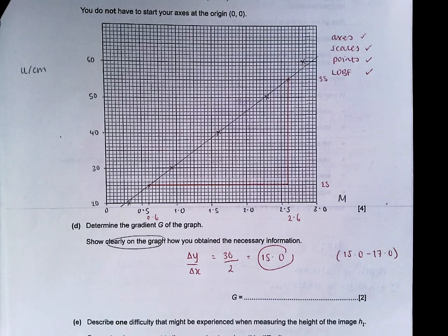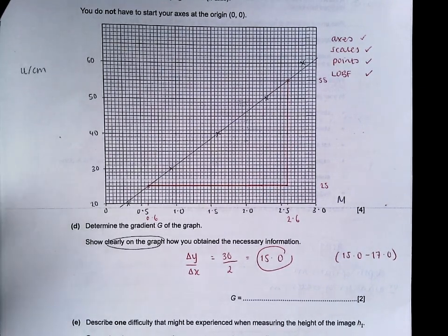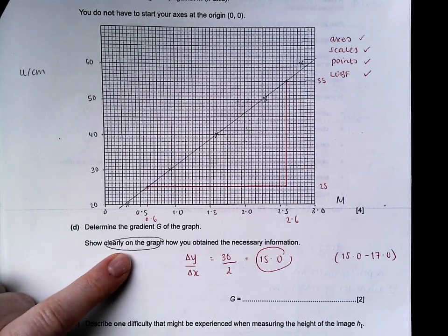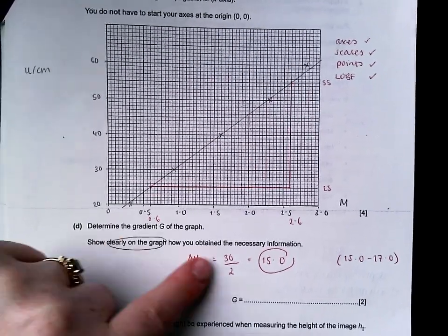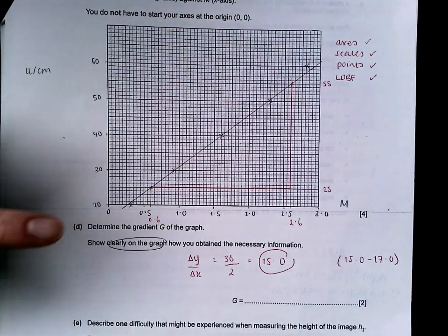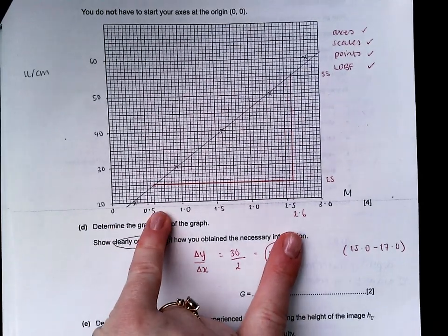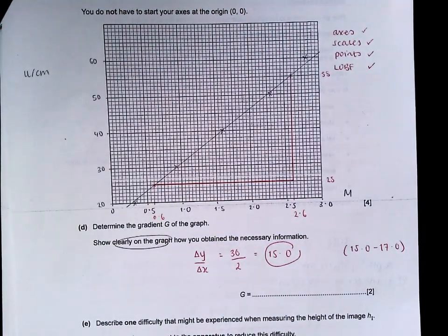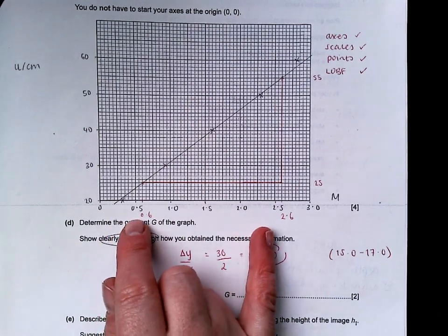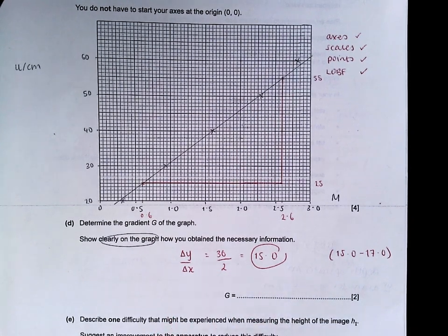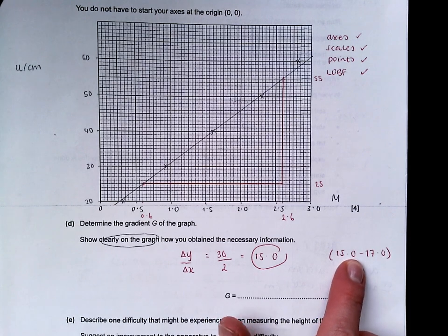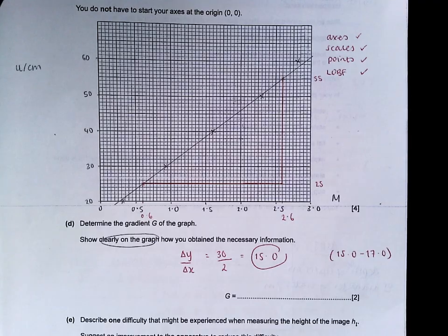Determine the gradient of the graph was done shockingly badly overall. I've taught you this many, many times. It also states show clearly on the graph. You cannot just do a calculation down here. You have to have drawn something on your graph paper to get the marks. I've told you to draw your triangle. You pick two easy points to measure that are as far apart as possible. Mine turned out to be 55 and 25. That difference is 30. My change in Y, my rise is 30. My change in X went from 0.6 to 2.6. That was 2 for my change in X. My change in Y over my change in X is my gradient value. I get 15.